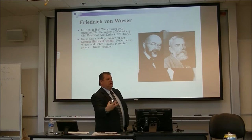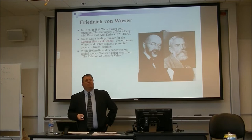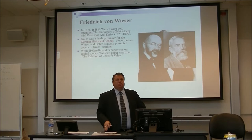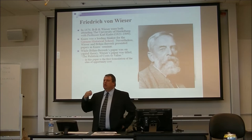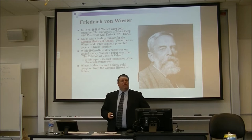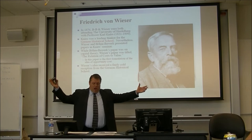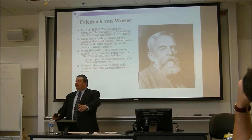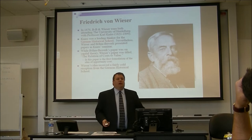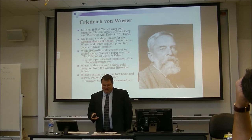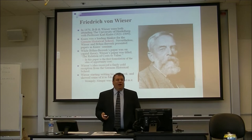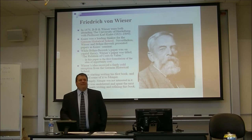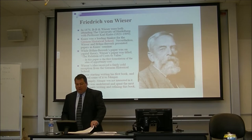Böhm-Bawerk's paper was on capital theory. Wieser's paper was on the relation of cost and value — and in this paper is where the first formulation of opportunity cost really starts to take shape. Wieser's idea received a cold reception, especially from the German Historical School who say there aren't any universal theories. So he took it to Menger, who also wasn't really interested. But Wieser was undeterred. He spent the next seven years writing and refining his first book, and when it came out, Menger completely changed his view: 'Yes, this is great, I love it.'